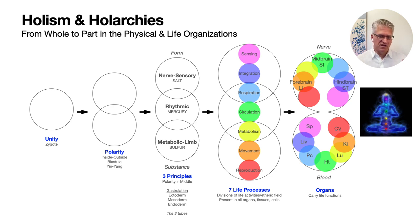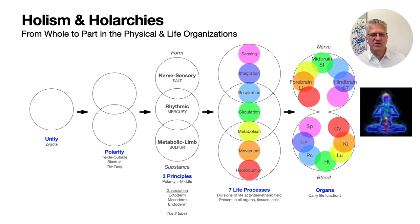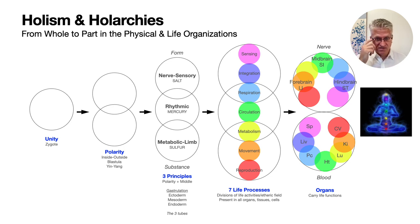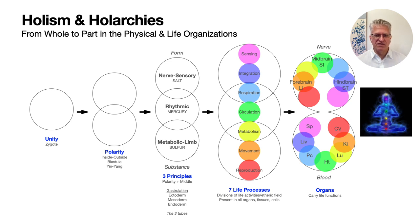Starting with the whole, the unity - for example, the fertilized egg, the zygote - we then have the next stage, the blastula after implantation, which is sort of a bilaminar germ disc where the future embryo develops from. The blastula is surrounded by the trophoblast, which will form the chorion and the placenta. A polarity develops between self and the world, inside and outside. In our third week of development, we have gastrulation, forming the trilaminar germ disc of ectoderm, mesoderm, endoderm, and then the three tubes: the neural tube, the aorta, and the gut tube.